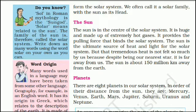The Sun: The sun is in the center of the solar system. It is huge and made up of extremely hot gases. It provides the pulling force that binds the solar system. The sun is the ultimate source of heat and light for the solar system. But that tremendous heat is not felt so much by us because, despite being our nearest star, it is far away from us. The sun is about 150 million kilometers away from the Earth. Do you know? Sol in Roman mythology is the sun god. 'Solar' means related to the sun.